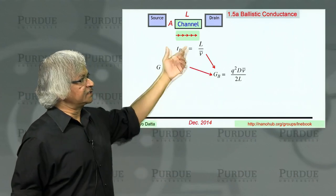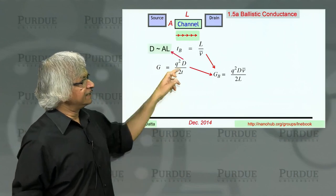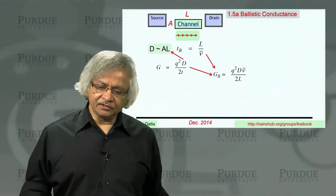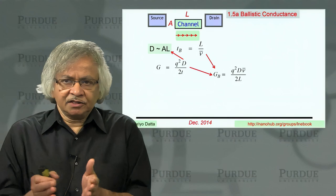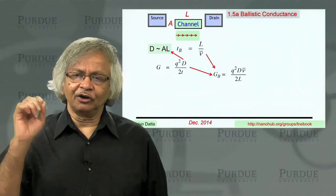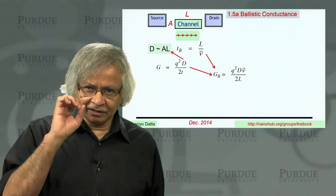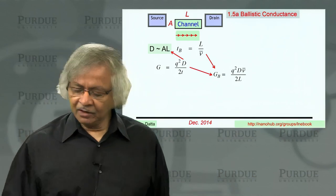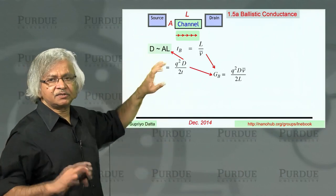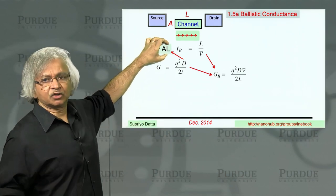Now, how does the ballistic conductance depend on the dimensions of the channel? Well, the first thing to note is that this density of states is proportional to the volume of the channel. Usually in large devices, people talk about the density of states per unit energy per unit volume, in which case it's a constant value for a particular material. Whereas, here we have defined the density of states as just per unit energy, not per unit volume. And so, our D is proportional to the volume.